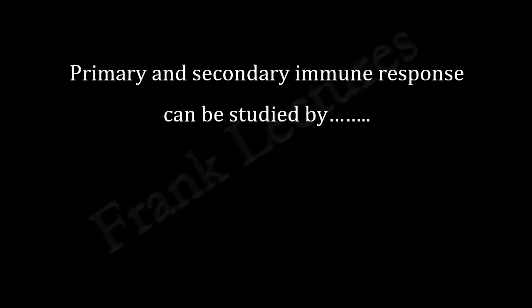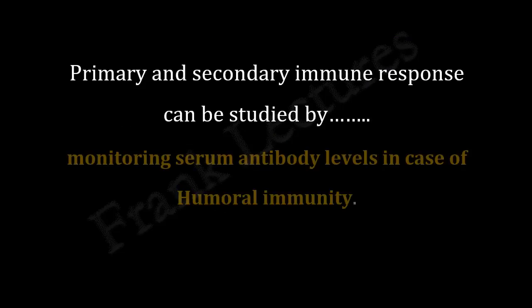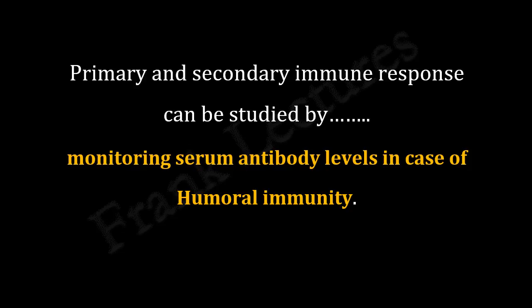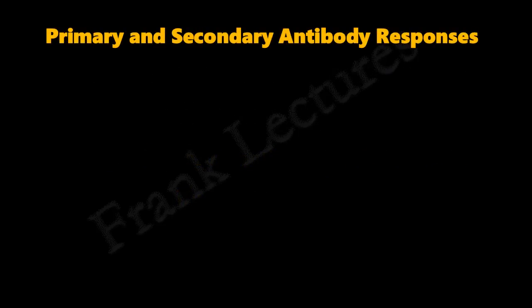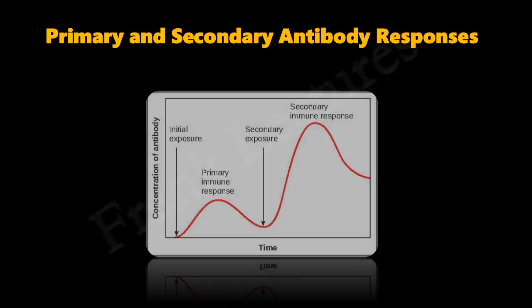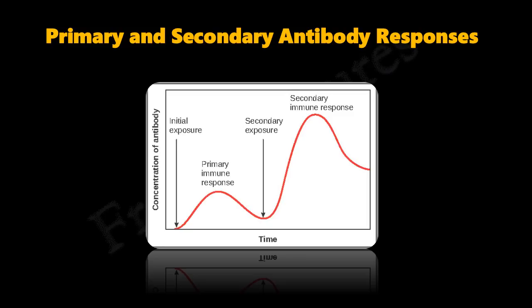The primary and secondary immune responses can be studied by monitoring serum antibody levels in the case of humoral immunity. Let's study in detail the primary and secondary antibody responses — specifically, the change in antibody concentration in the serum with respect to time.